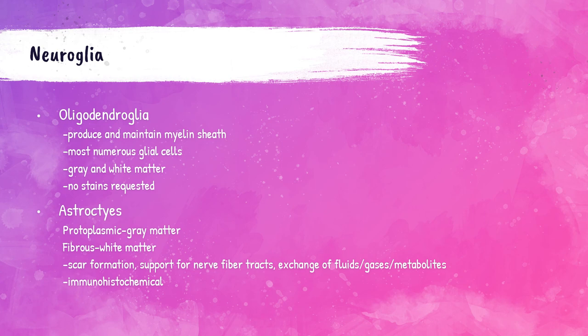There are two types of astrocytes: protoplasmic astrocytes, which are in the gray matter, and fibrous astrocytes, which are in the white matter. When there is injury in the central nervous system, astrocytes function in scar formation. They also support nerve fiber tracks and help in exchanges of fluids, gases, and metabolites within nervous tissues, blood, and cerebrospinal fluid. Stains for astrocytes exist but have largely been replaced with immunohistochemical procedures.